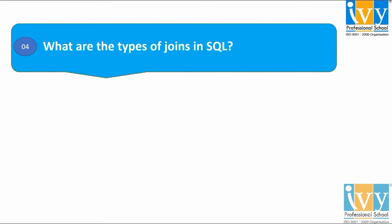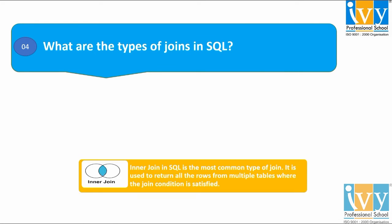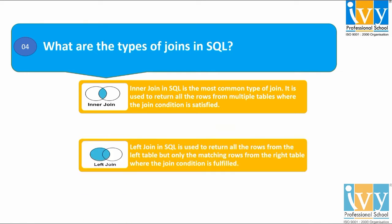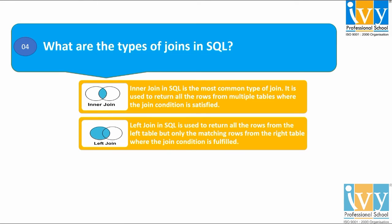Moving on to the fourth question: what are the types of joins in SQL? The first type of join is inner join. Inner join in SQL is the most common type of join. It is used to return all the rows from multiple tables where the join condition is satisfied, as shown clearly in the diagram. The second type of join is the left join. A left join in SQL is used to return all the rows from the left table but only the matching rows from the right table where the join condition is fulfilled.